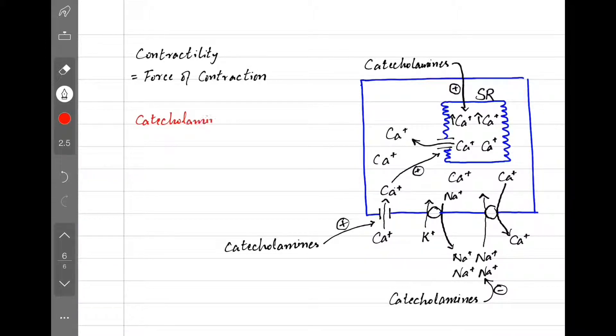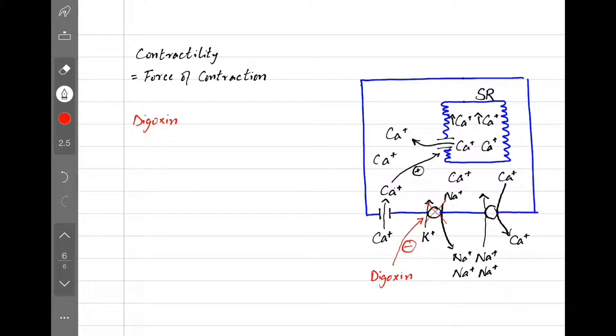So catecholamines such as epinephrine increase intracellular calcium and reduce extracellular exchange of calcium. The net effect: more calcium inside, increased contractility, and so increased cardiac output. The second drug that increases contractility is digoxin. It does so by blocking the sodium potassium pump. No sodium out, no exchange with calcium. Calcium stays inside to be used in contraction. That's why digoxin is used in heart failure to improve pumping.